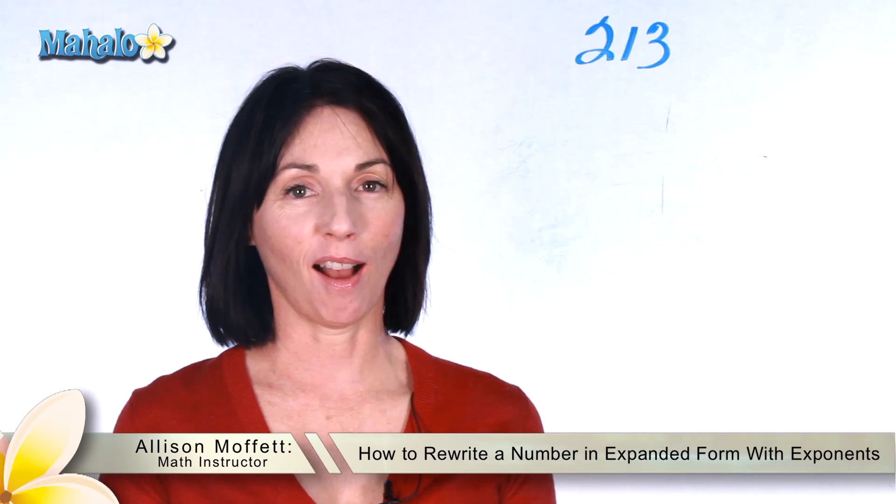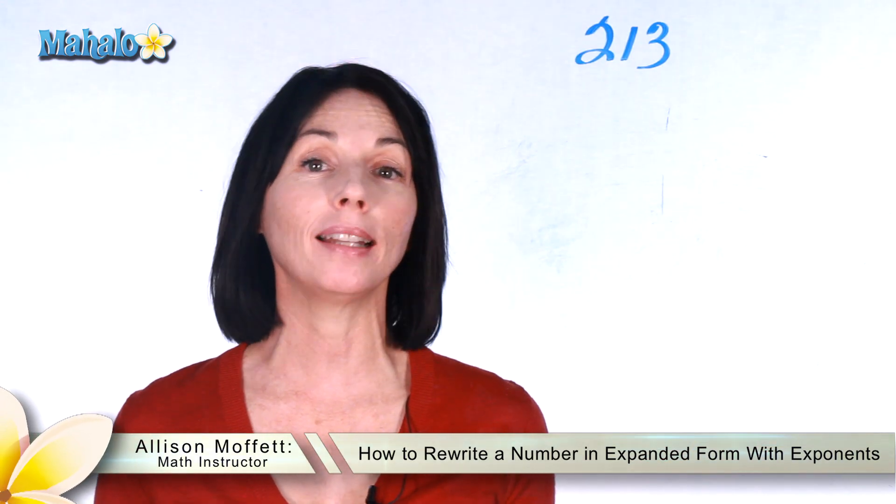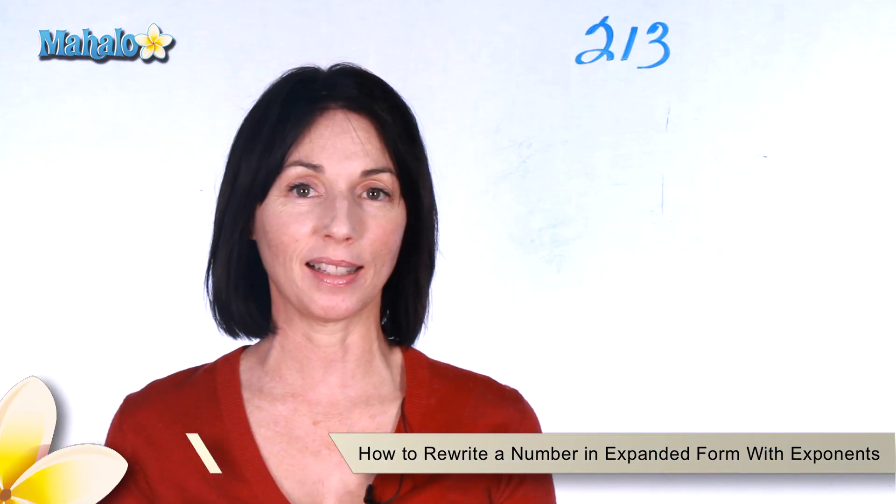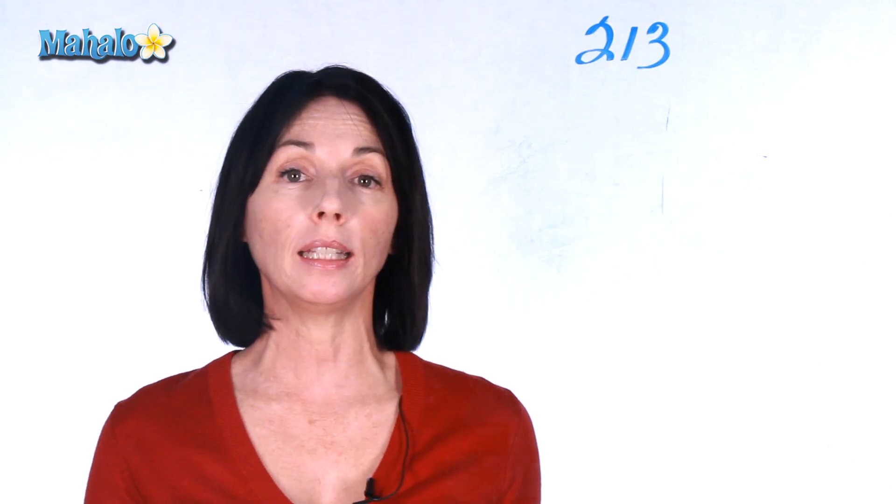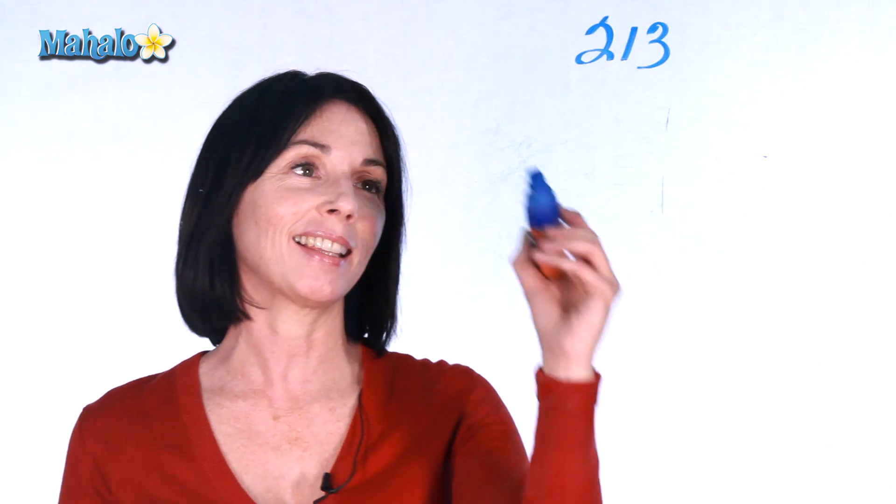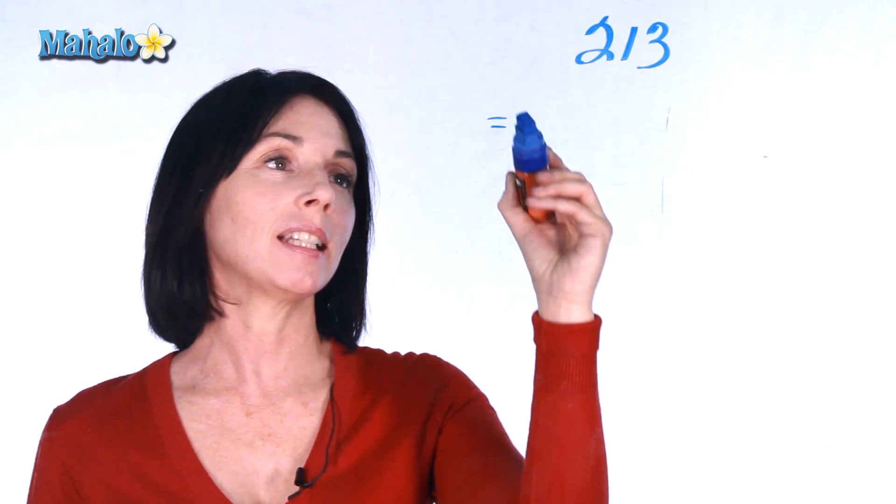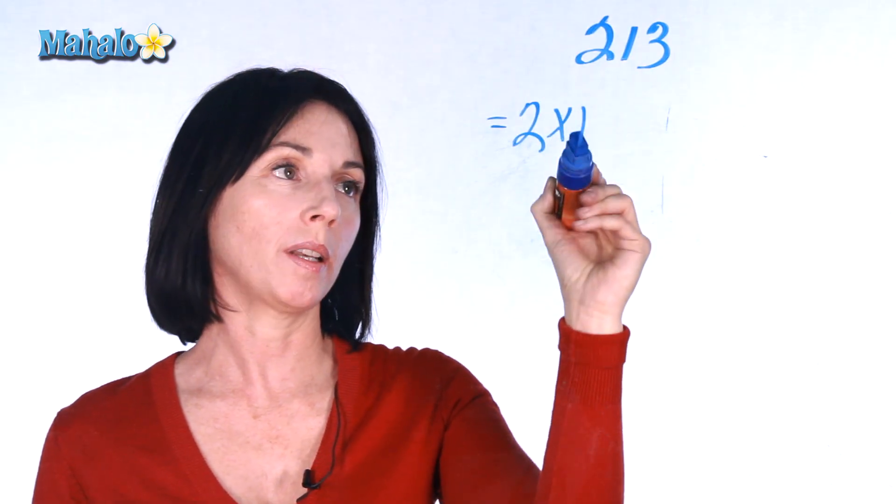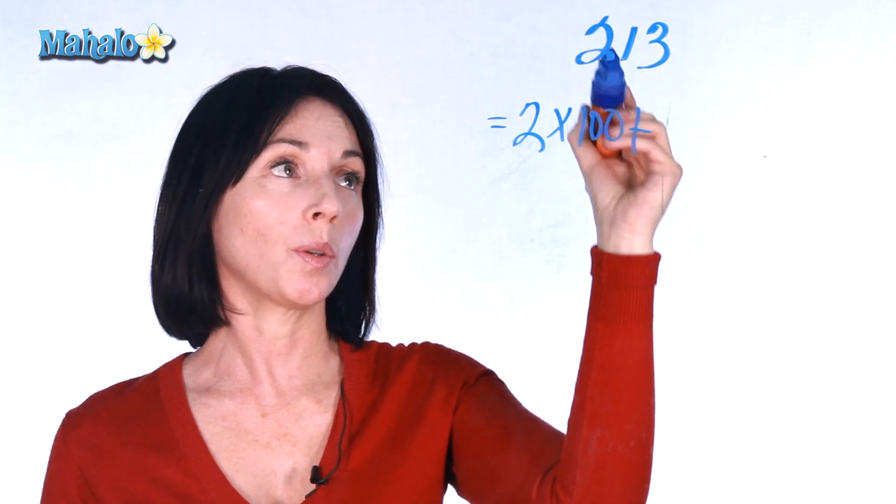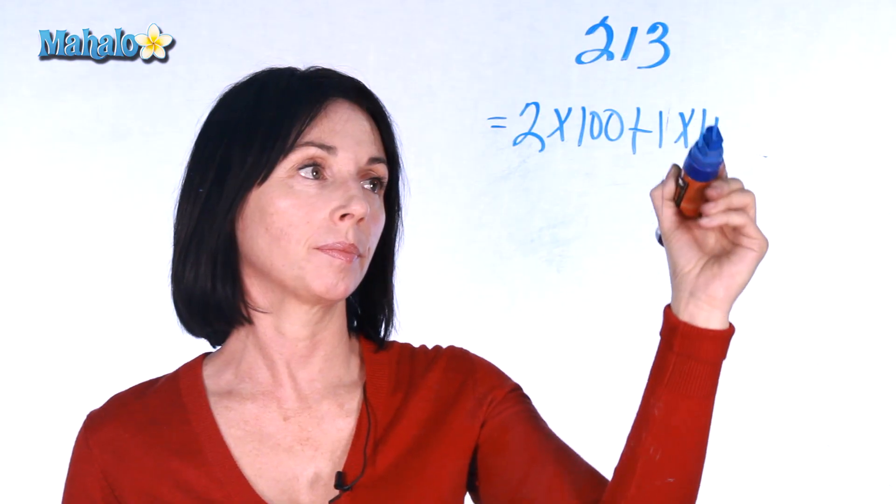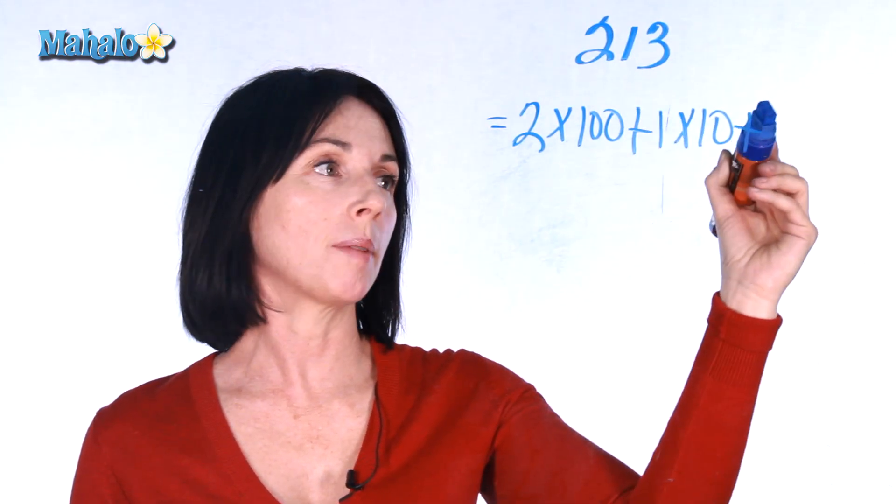Hey, it's Allison from Mahalo.com and today we're going to learn how to rewrite expanded form using exponents. Now we learned before that we can write a number like 213 in expanded form and it looks like this. 213 is equal to 2 times 100 plus 1 times 10 plus 3 times 1.